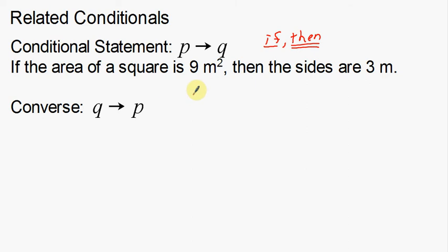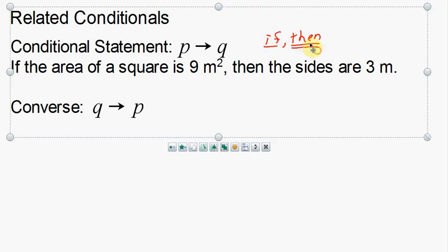We're not too worried about the validity of the statement — we don't care if it's right or wrong. We're just looking to rewrite it as a converse on this slide. So what we're doing is looking at the converse. If the area of a square is 9 meters squared — that's the P part of this symbol, the hypothesis, the 'if' part. So what I should do is move this.